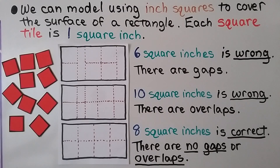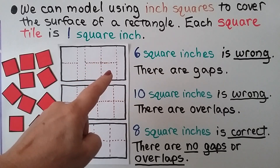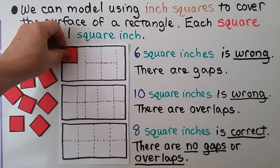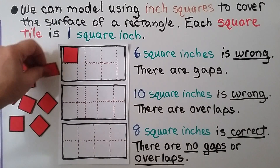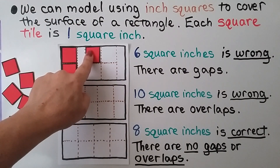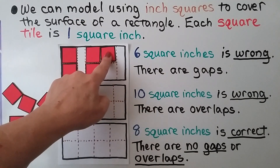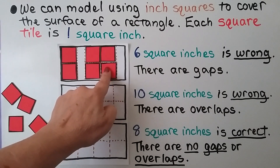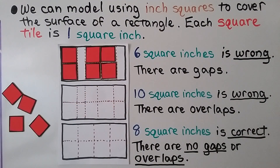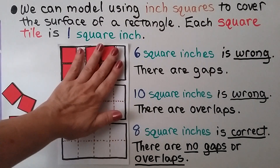We can model using inch squares to cover the surface of a rectangle. Each square tile is one square inch. For the top example, we put a square tile in each of the outlined square spaces where the dotted lines show they would fit. With six squares placed that way, though, the result is wrong — it's not six square inches because there's a big gap here and a big gap there.